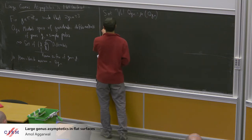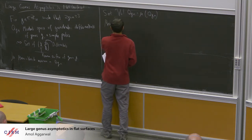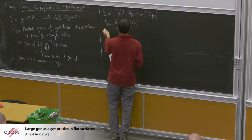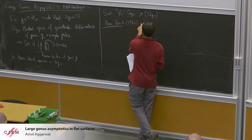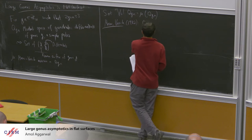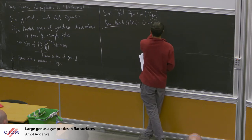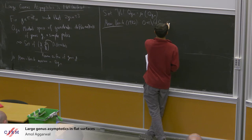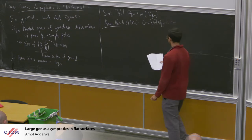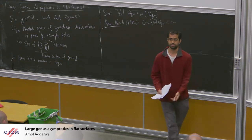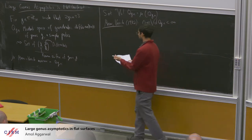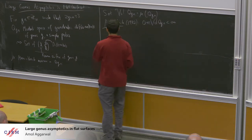The theorem going back to the independent works of Masur and Veech about 40 years ago is that this volume is non-trivial in the sense that it's neither zero nor infinite. So the question we're interested in is: what is it? What is it doing? The first question is how do you compute it at all?